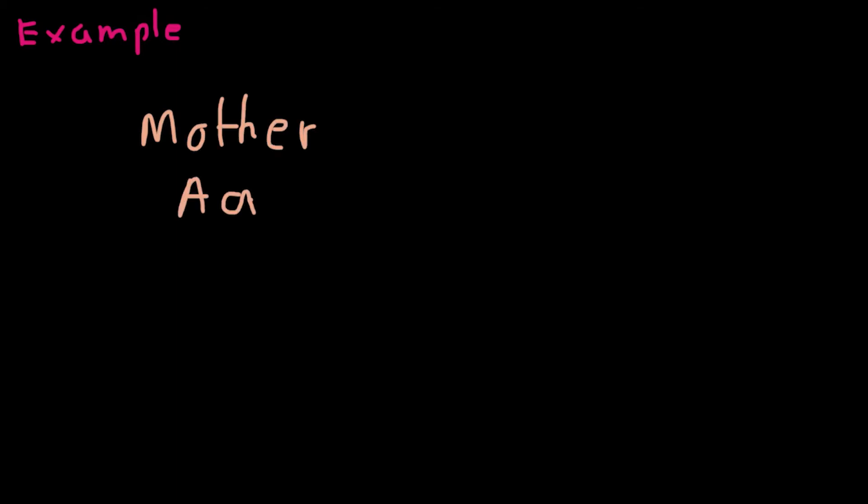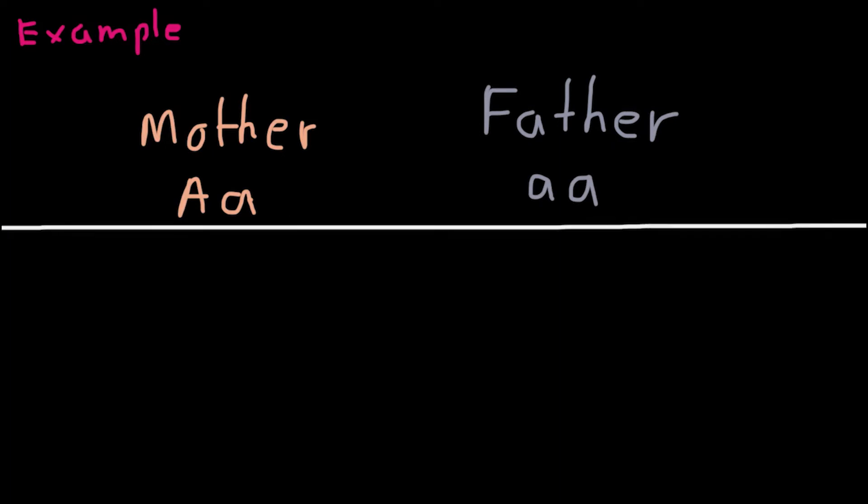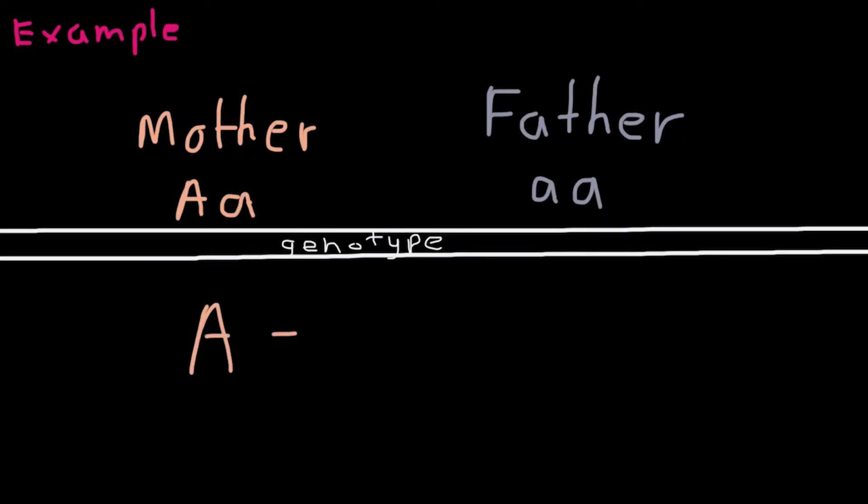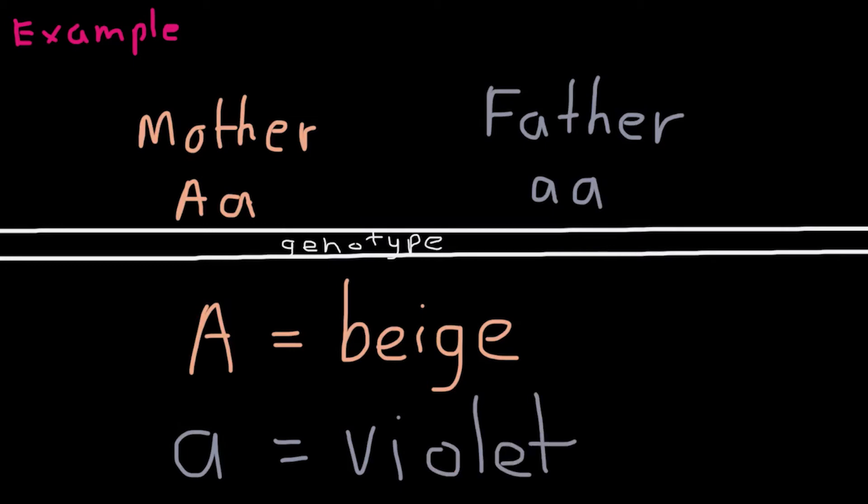Say there are two parent chinchillas, but one is violet and one is beige. The beige parent has the genotype big A and little a. And the violet parent has the genotype small a and small a. I'm just going to say big A equals beige color and little a equals violet color. If I use a capital letter to represent an allele, it means it's a dominant allele. In our case, the beige color is going to be the dominant allele.